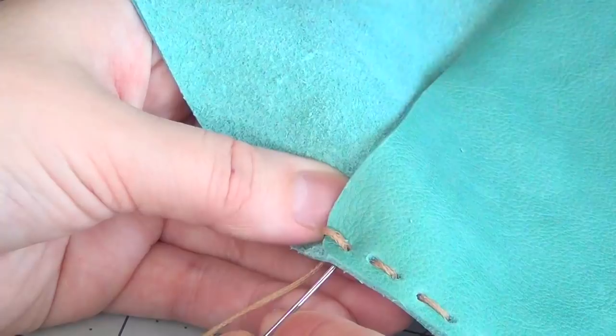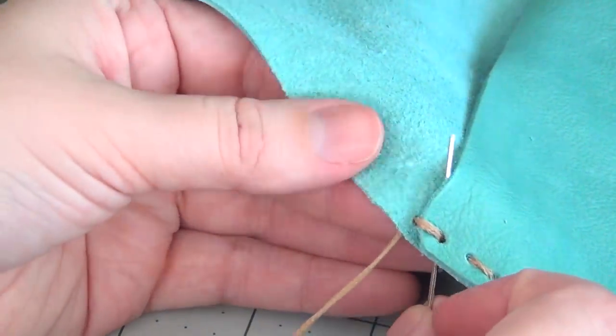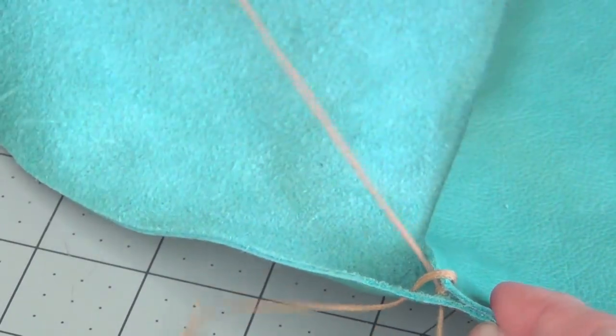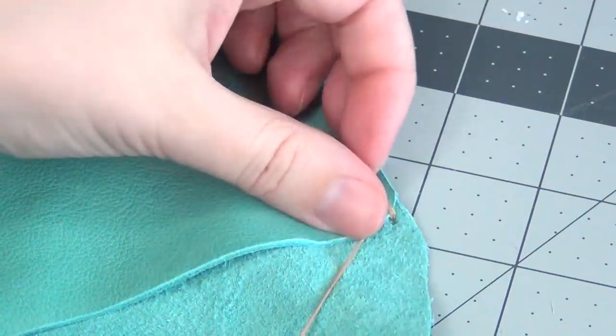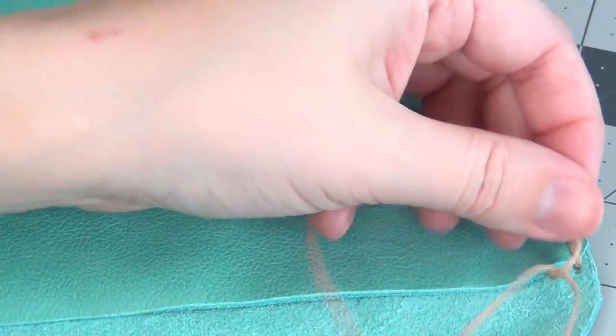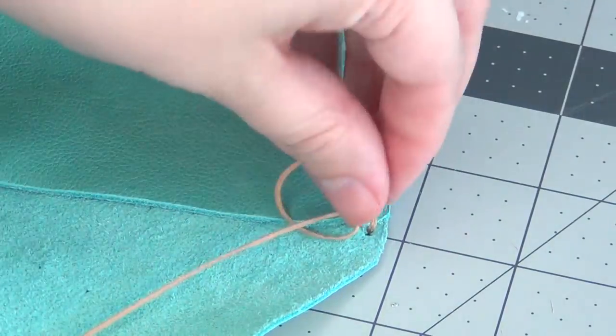Then double up that stitch the same way you did the first one. And instead of going through both layers, go through only the first layer and then tie your knot on the inside of your clutch. Begin by tying a regular overhand knot.